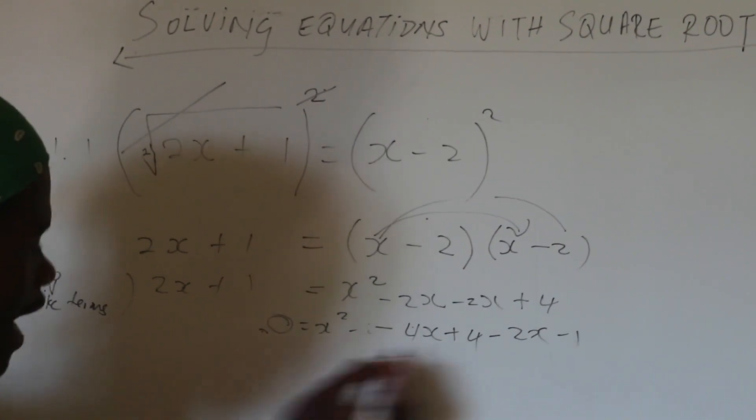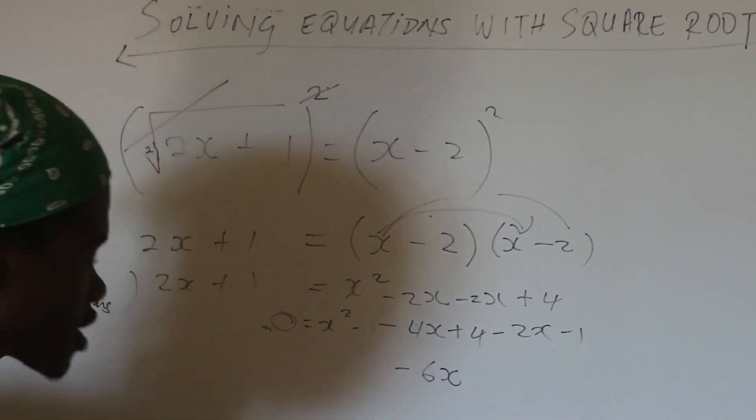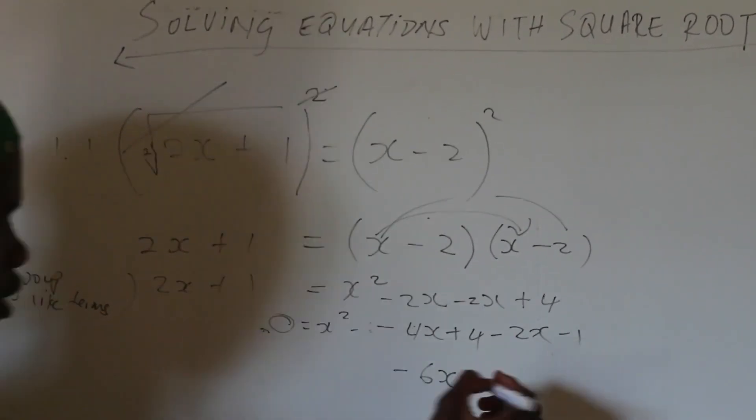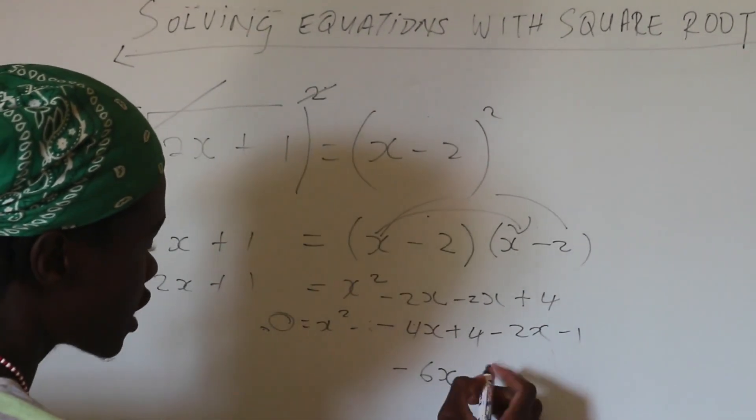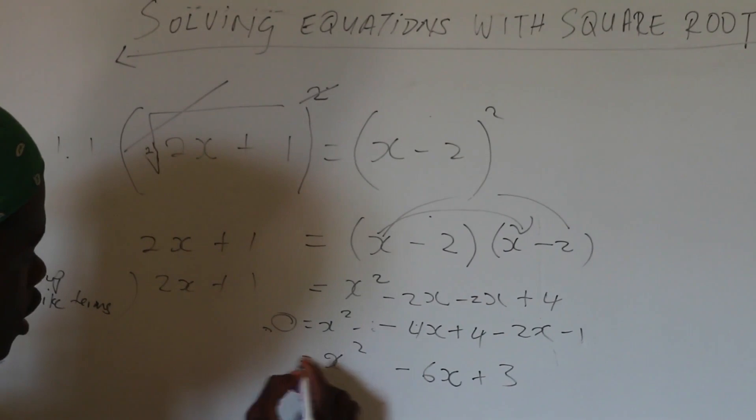Like terms. Negative 4x, negative 2x will give me a negative 6x. Perfect. I've just dealt with the x's. 4 minus 1 is going to give me a 3, a positive 3. Then I'm left with x squared. It's equal to 0.